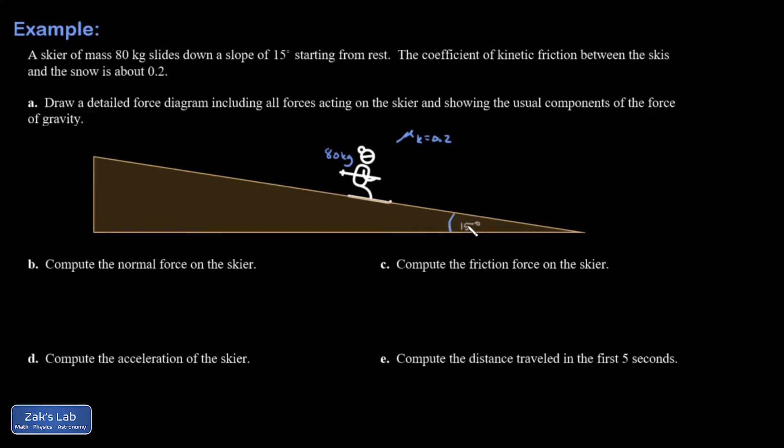And part A says, draw a detailed force diagram including all forces acting on the skier and showing the usual components of the force of gravity. So we're going to do the traditional decomposition here, parallel and perpendicular to the ramp. And this lag issue is making this a little tricky, but I'll figure it out.